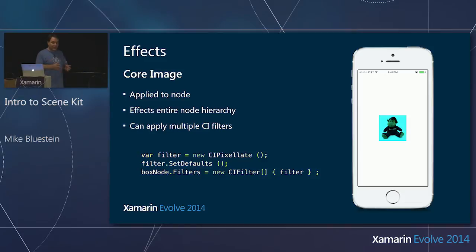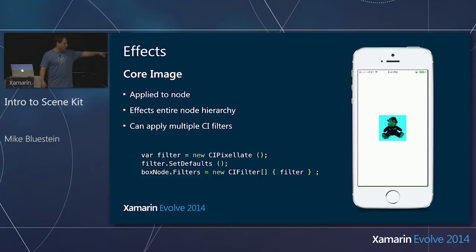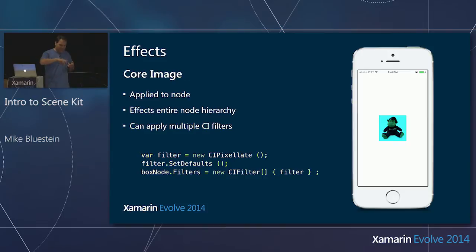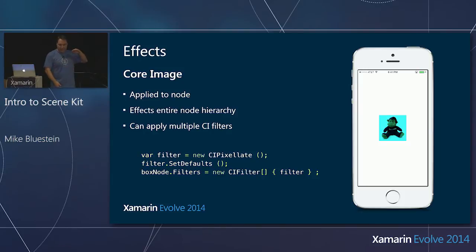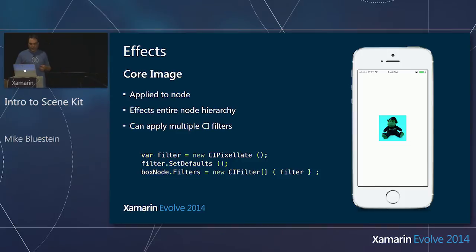I can create a CI pixelate filter. Core Image lets you do a variety of imaging effects — Gaussian blur, pixelating, sepia tone, a noir filter to make it look black and white, and much more. And Core Image lets you chain a whole bunch of filters together, creating effectively a recipe, then apply it all onto the GPU in one step. It's very efficient, and the programming model is exactly the same here.